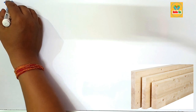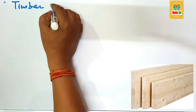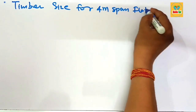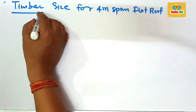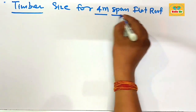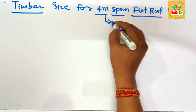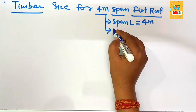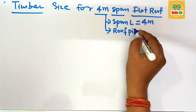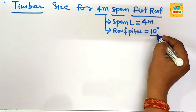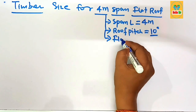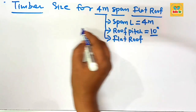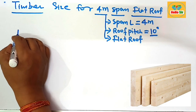In this video you will learn about the timber size for a four meter span flat roof. The joist length is about four meters, and the maximum roof pitch for a flat roof is about 10 degrees. If the roof pitch is a maximum of about 10 degrees, that is called a flat roof. You have to figure out the timber size.